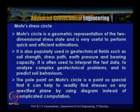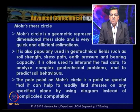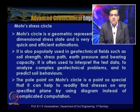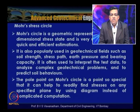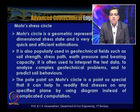The Mohr circle is a geometric representation of the two-dimensional stress state and is very useful for quick and efficient estimations. It is popularly used in geotechnical fields such as soil shear strength, earth pressures involving active and passive conditions, and bearing capacity theories. It is often used to interpret test data, analyze complex geotechnical problems, and predict soil behavior. The pole point on the Mohr circle is a special point that helps readily find stresses on a specified plane using the diagram instead of complicated computations.